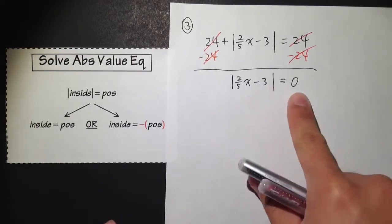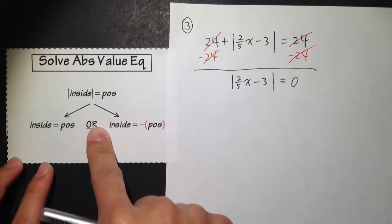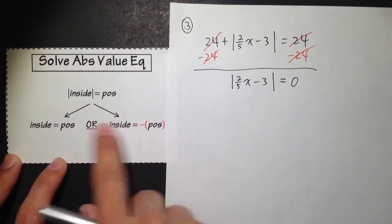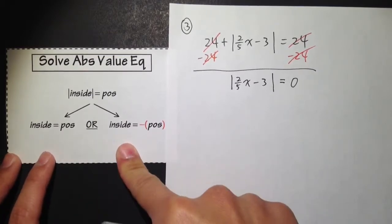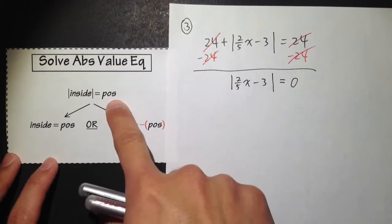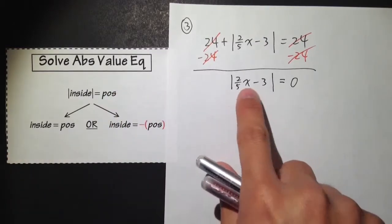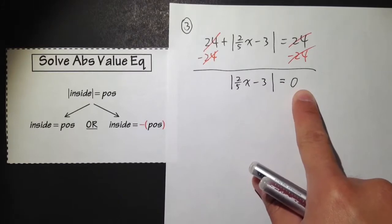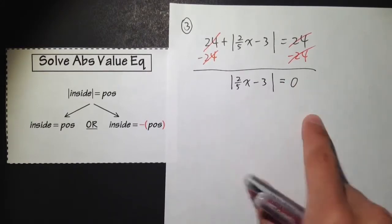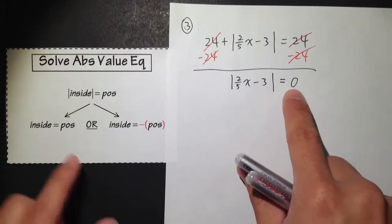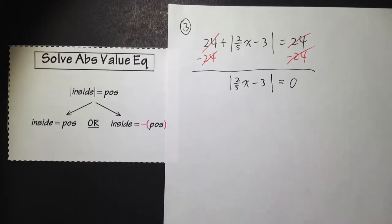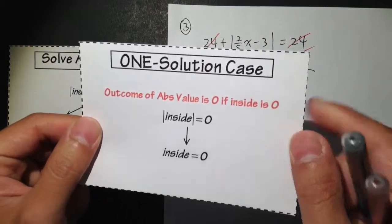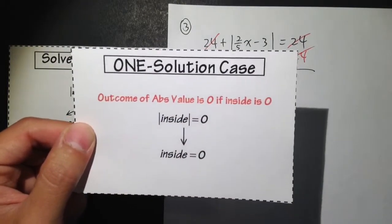Absolute value is equal to 0. For this case, when you split into two different equations, this only works to get two answers when you have a positive number on the right-hand side. But here we have absolute value equal to 0. We can split into two different equations, but then you have positive 0 and negative 0, which are the same. So this is actually the special case — we are going to have one solution for this equation.